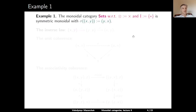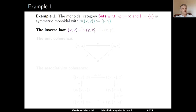Here is an example. The monoidal category of all sets, where the tensor product is the Cartesian product and the identity object is a fixed singleton. This category is symmetric monoidal, where sigma is defined by swapping two components in the Cartesian product — the pair (X, Y) is sent by sigma to (Y, X). Checking the inverse law: we start from (X, Y), apply sigma to get (Y, X), apply sigma again to get (X, Y), and the composition is the identity.